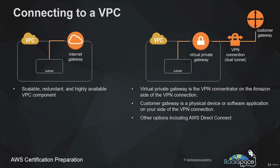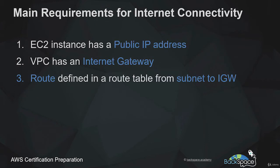The Virtual Private Gateway is the VPN concentrator on the Amazon side of the VPN connection, and the Customer Gateway is a physical device or software application on the customer side. We also have AWS Direct Connect, which is a physical fiber optic high-speed connection from an enterprise to AWS, normally used by large organizations that require very large throughput.